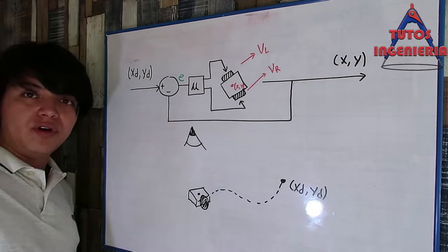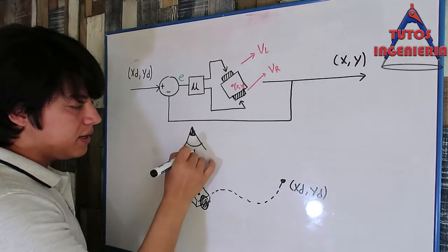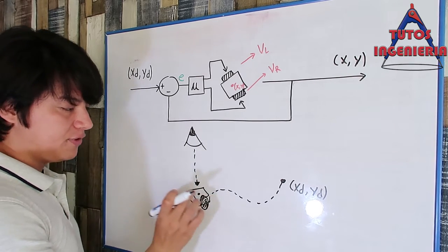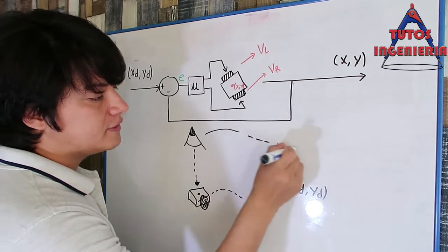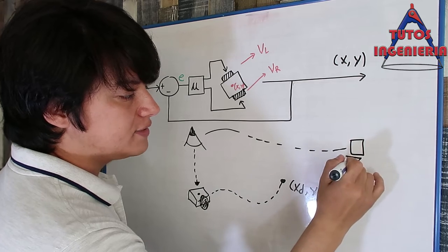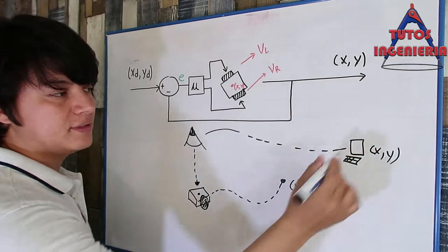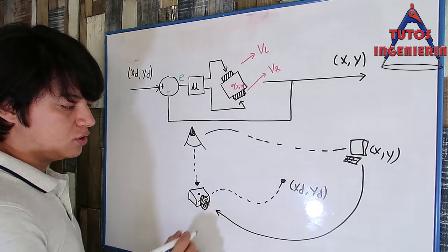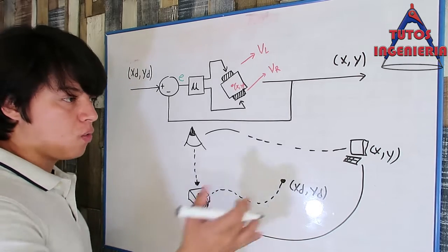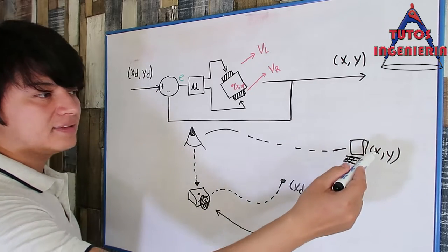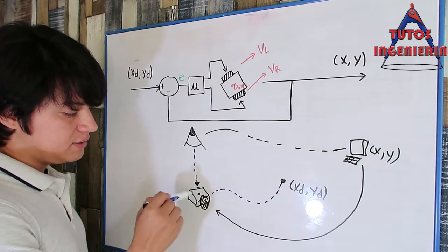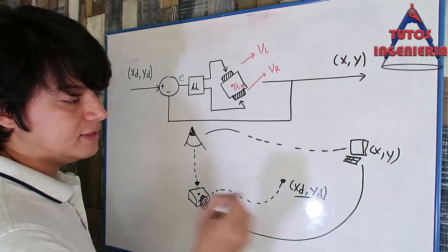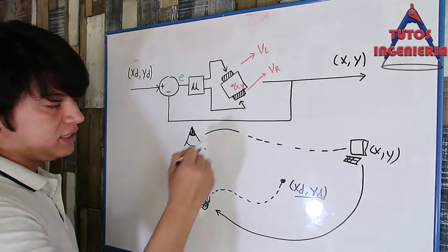You could use a camera on the roof that watches the position of the car at every sample of time. That camera sends to a computer the X and Y coordinates of where our car is placed. This computer could communicate with the microcontroller of the robot via Bluetooth or Wi-Fi, and tell it the X and Y position so the microcontroller can calculate the velocity of the right and left wheels to reach the desired point.